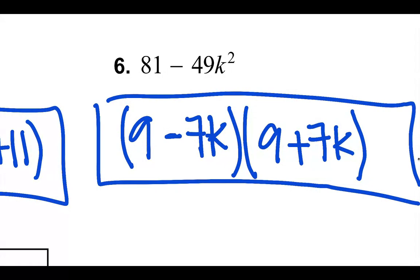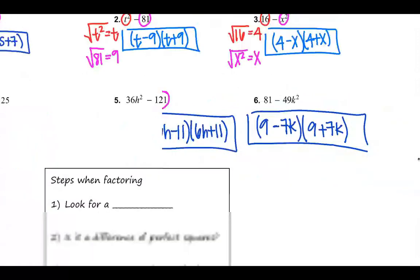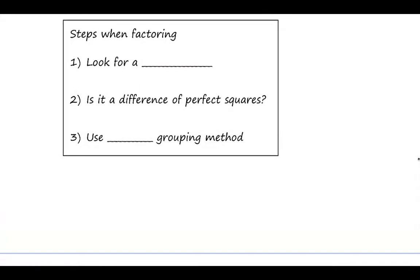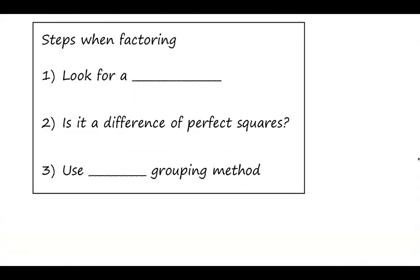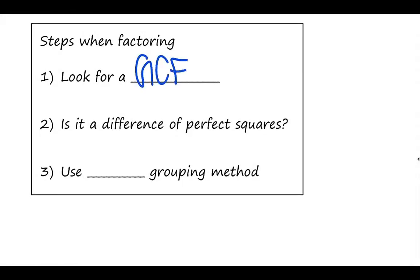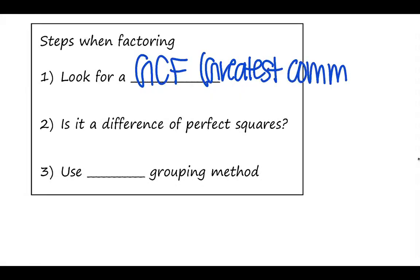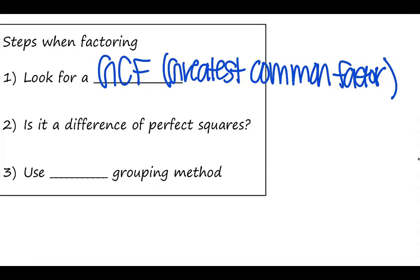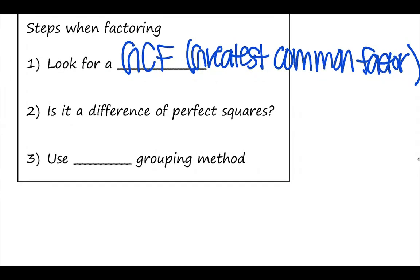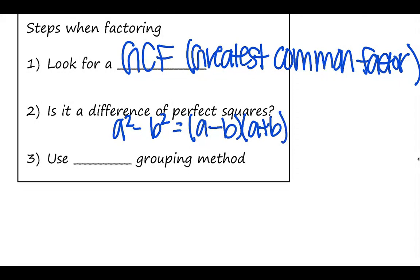So those are pretty fun and don't require a whole lot of work. Here are the steps when factoring. First, always look for a GCF — always look for a greatest common factor. Second, is it a difference of perfect squares? If so, it's what we did above — a squared minus b squared equals a minus b times a plus b. And then use the a times c grouping method.